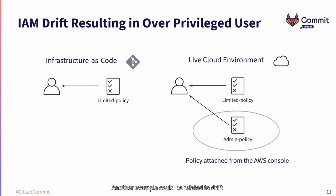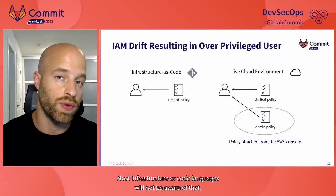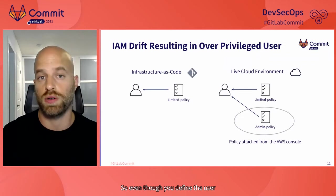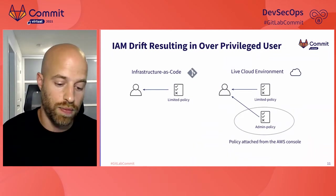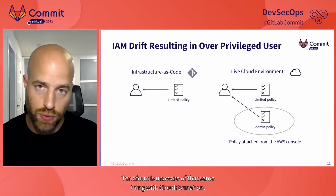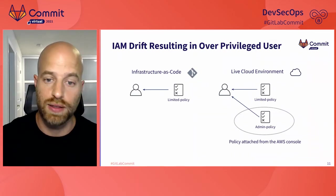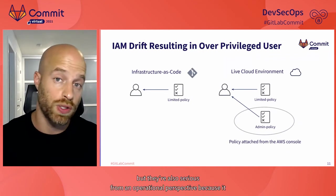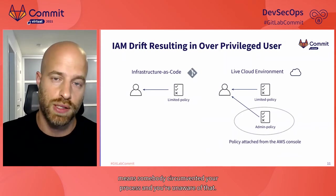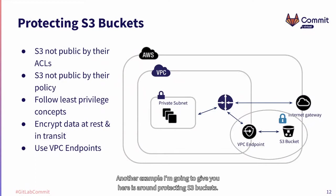Another example is related to drift. Say you have a user that is part of a group, and the group has an IAM policy attached to it. Now somebody goes into the console and attaches another policy to that group. Most infrastructure as code tools will not be aware of that — even if you defined the user, the group, and the policy attachment in Terraform or CloudFormation, if somebody manually attaches another policy, those tools are unaware. By not analyzing the code alongside the live environment, you can't spot something like that. These kinds of drifts are very serious from a security perspective and indicate that somebody circumvented your process.